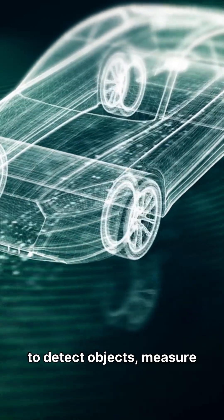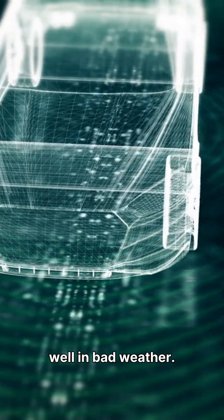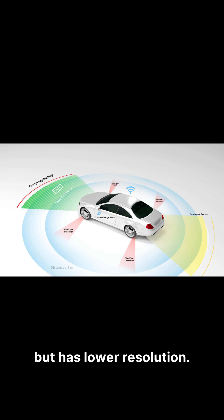Radar uses radio waves to detect objects, measure distance, and speed, working well in bad weather. Radar is great for functions like automatic braking, but has lower resolution.